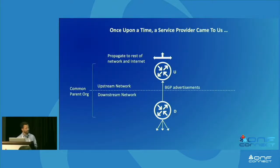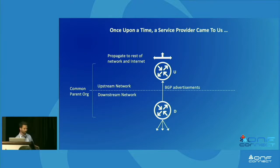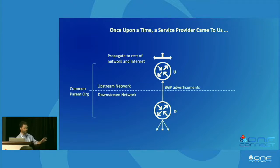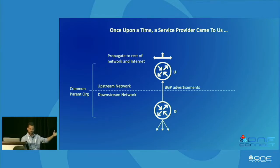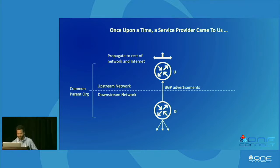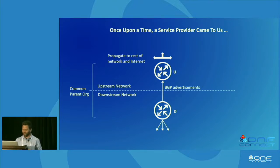What does it mean to query a network like a database? I'd like to explain that by way of a story about a large service provider that came to us with an interesting problem. There are two networks, both part of a single service provider but operated by different groups. There's an upstream network and a downstream network, and I'm focusing on two devices — a pair of BGP routers peering with each other. U is the upstream BGP peer, D is the downstream peer, and D is advertising routes up to U, which then distributes them throughout its network and to the rest of the internet.